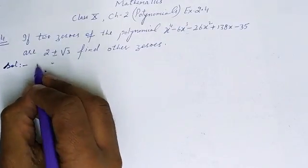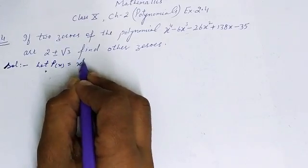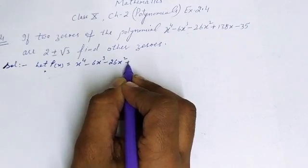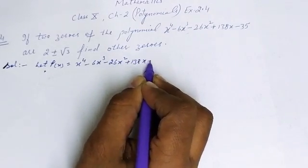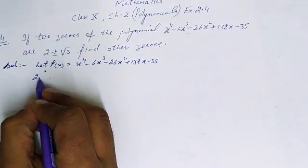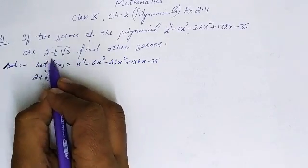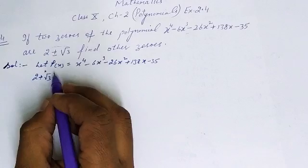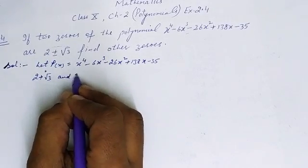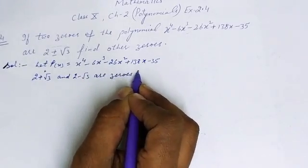Let p(x) = x⁴ - 6x³ - 26x² + 138x - 35. It is given that 2+√3 and 2-√3 are zeros of p(x).